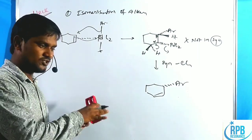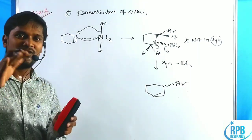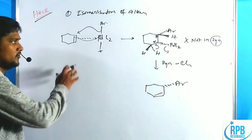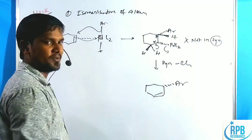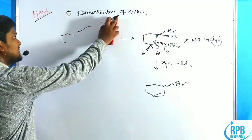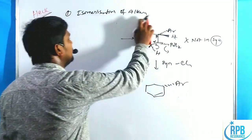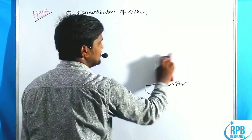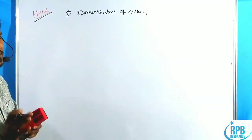This isomerization of alkenes is observed in the Heck cross-coupling reaction, and also leads to intramolecular Heck cross-coupling products.